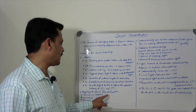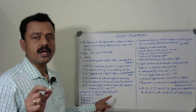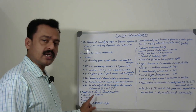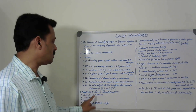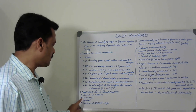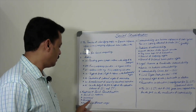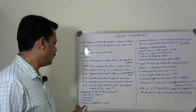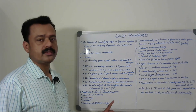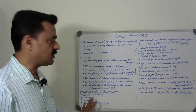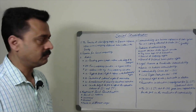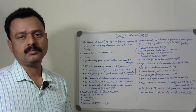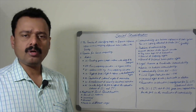Next, what are the features of social stratification? Social stratification is social in nature, it is universal, it is ancient, and it exists in different ways. These are the features of social stratification.